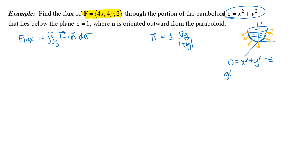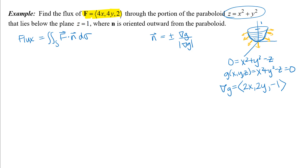I have a choice about how to do that — I can either subtract Z from both sides or subtract X squared and Y squared from both sides. I'm going to write this as 0 equals X squared plus Y squared minus Z. This is my function G. So my gradient vector will be: partial derivative with respect to X is 2X, with respect to Y is 2Y, and with respect to Z is negative 1. I've now calculated my gradient vector. I need to find its magnitude and also choose the direction — plus or minus.